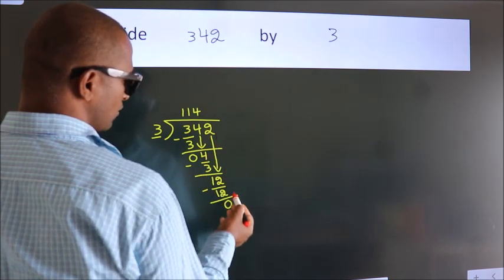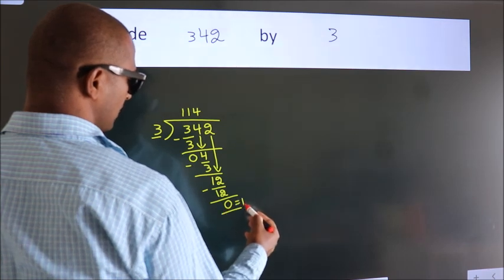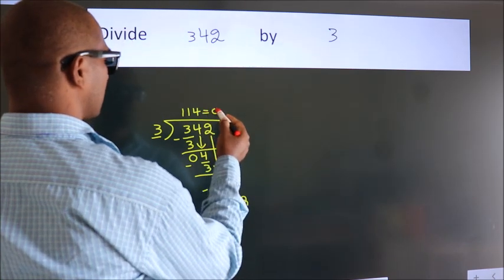After this, no more numbers to bring it down. So we stop here. This is our remainder. This is our quotient.